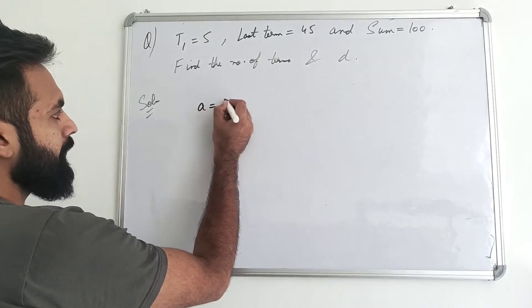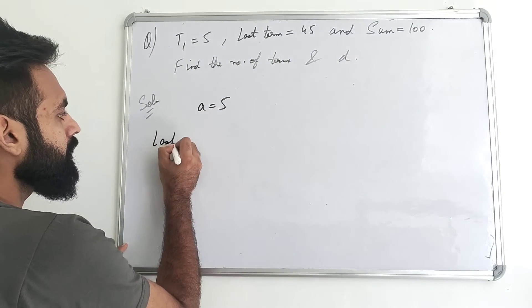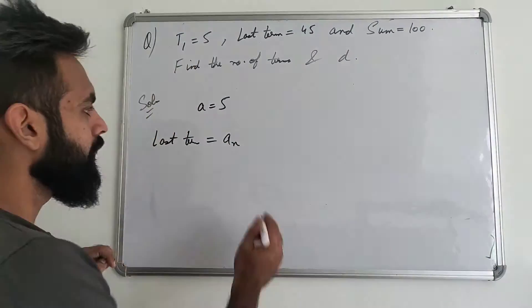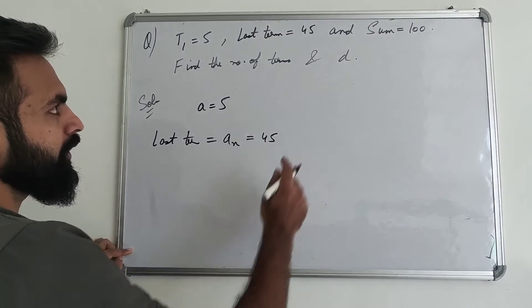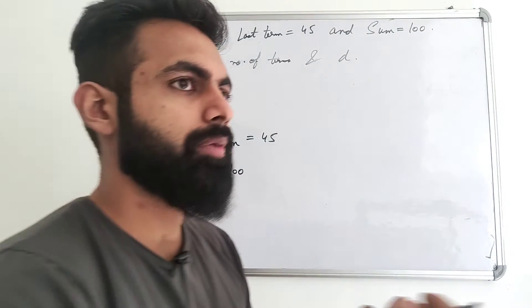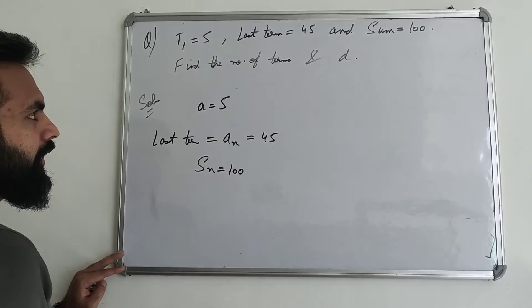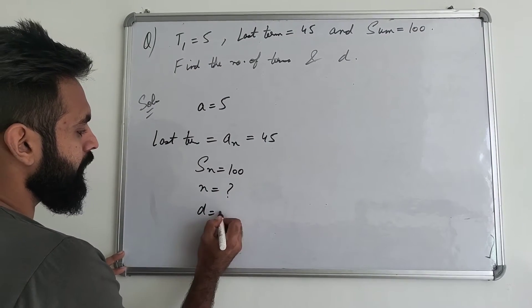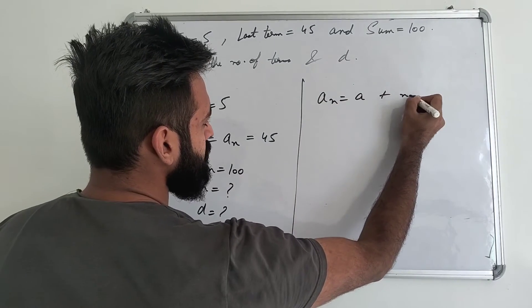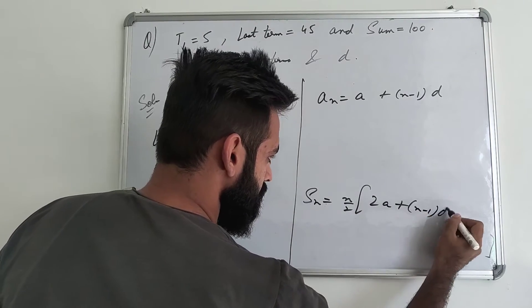First of all, I will write what provided is. A has 5. We call the first term. Last term has 45. So I say last term is designated as nth term. We say that n number of terms. So AN last term will be. So AN is equal to 45. Sum is 100. It means that SN. I take all the AP. If I say n number of terms in AP, then AN will be last term and AN will be sum till the last term. It is given 100. So what do you do? N find out and D find out. Look, in this we will approach that method. AN is equal to A plus N minus 1 into D. Write a formula. SN is equal to N by 2, 2A plus N minus 1 into D.